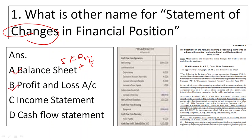Option B is profit and loss account and income statement — these are the same. In this statement, you will find information about revenues, expenses, profits and gains. Then comes the cash flow statement, which is actually the right answer. Cash flow statement is the statement of changes in financial position.